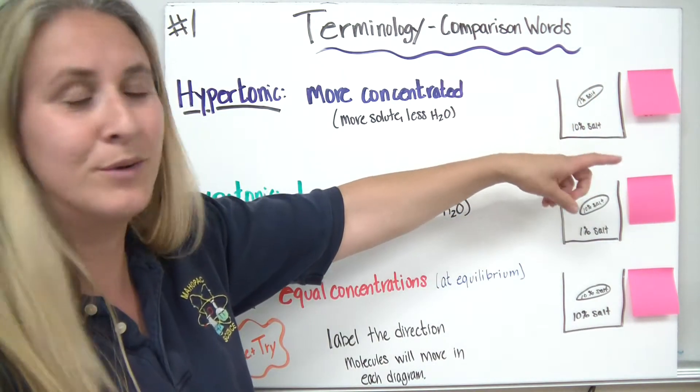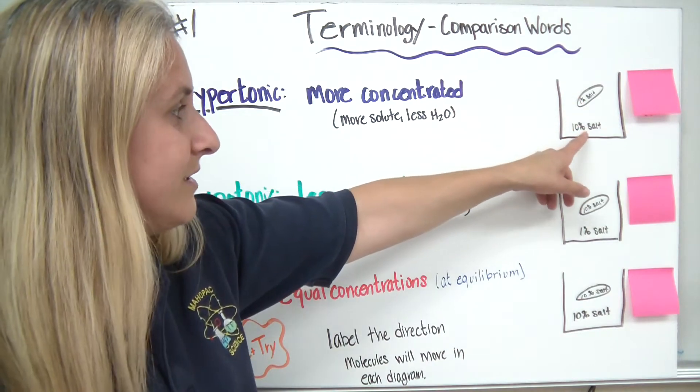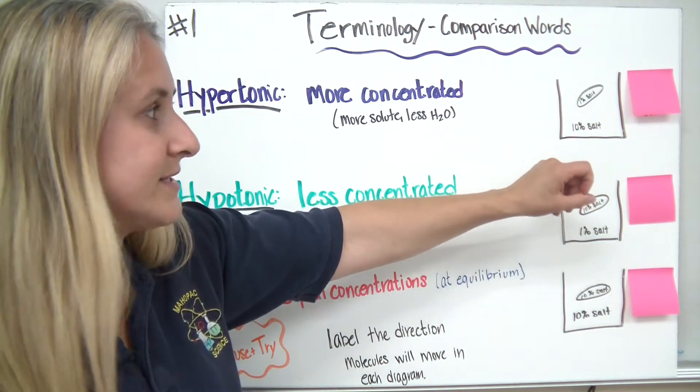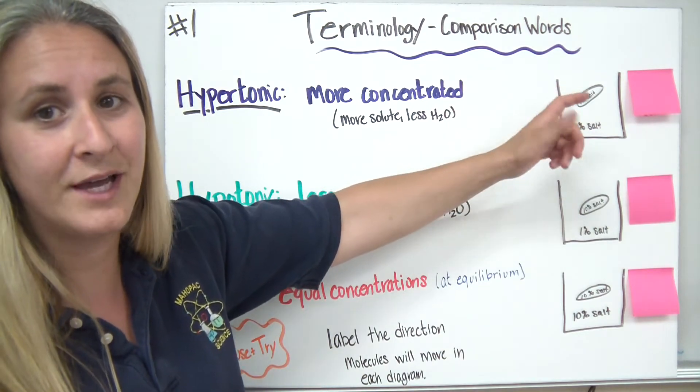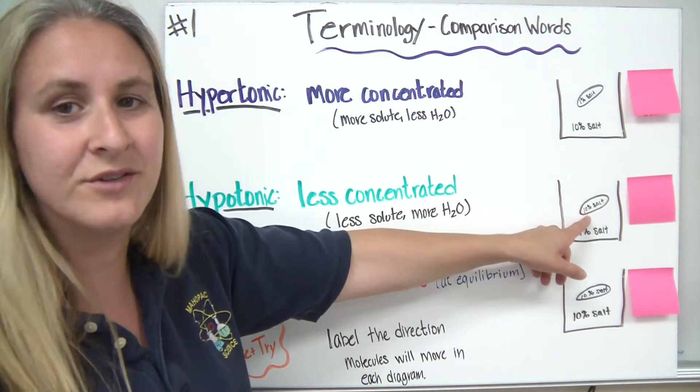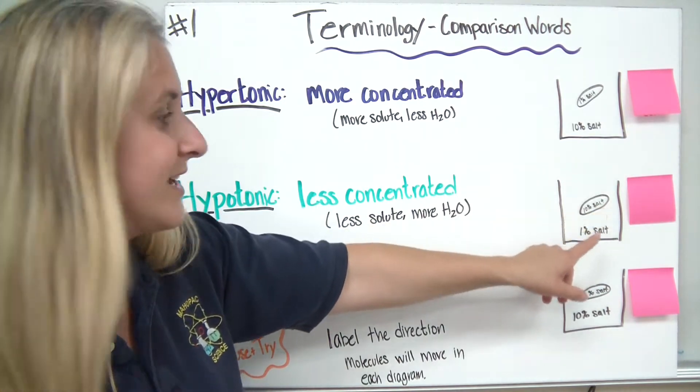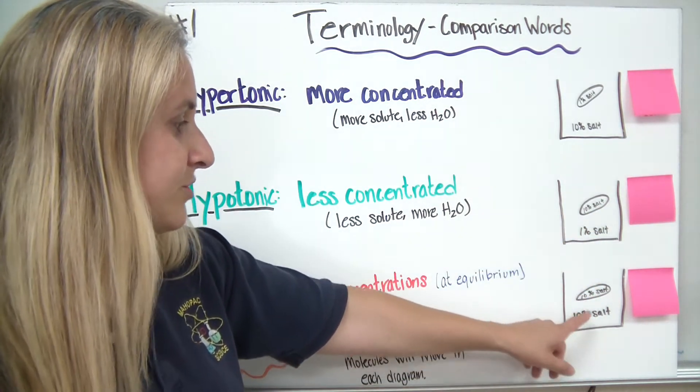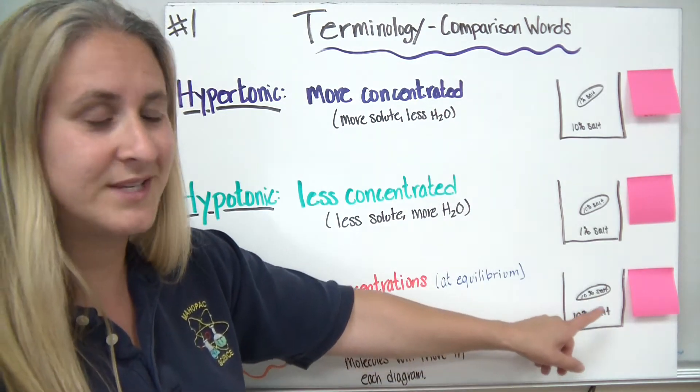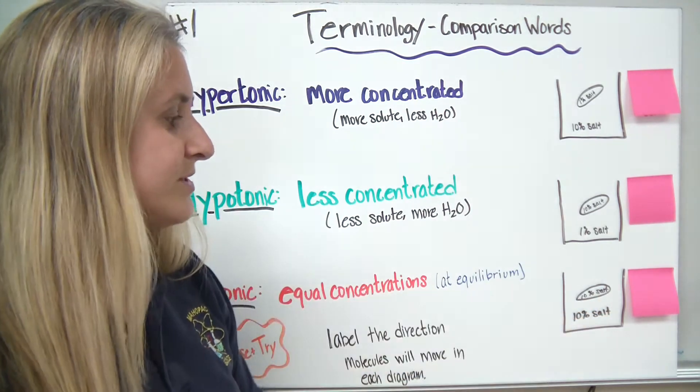So in this case we would have 1% salt inside the cell and 10% salt outside the cell, and determine which one is more concentrated or where it's hypertonic. And in this situation, there's going to be 10% salt inside the cell and 1% salt outside. And in this situation, there's 10% salt inside and 10% salt outside.